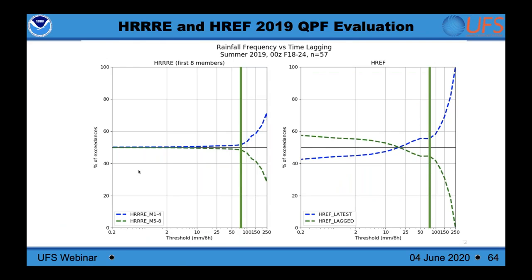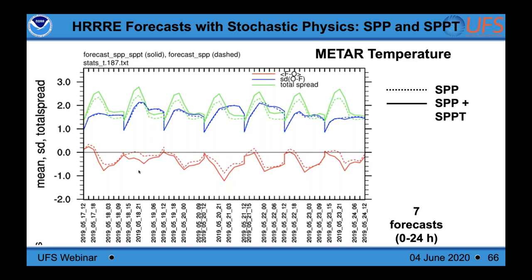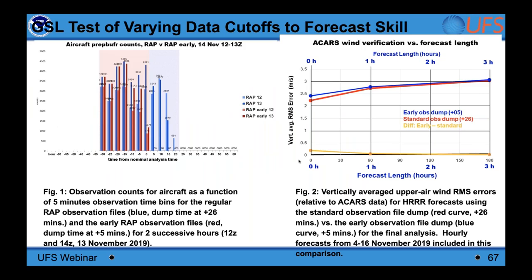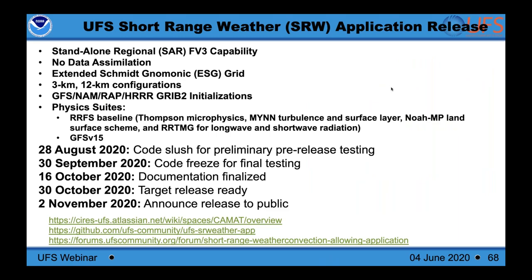Stochastic physics approaches — both parameter perturbations and tendency perturbations — are being deployed in the HRRR ensemble to address under-dispersion. Results show the total spread increasing with the solid line compared to the dashed line with just parameter perturbations alone, while total ensemble error and biases remain essentially unchanged. The goal is to drive spread from uncertainties of the day rather than from individual member biases. Another aspect is the speed of running ensemble systems with observation data cutoffs as short as 5 minutes after the top of the hour for regional RRFS applications.